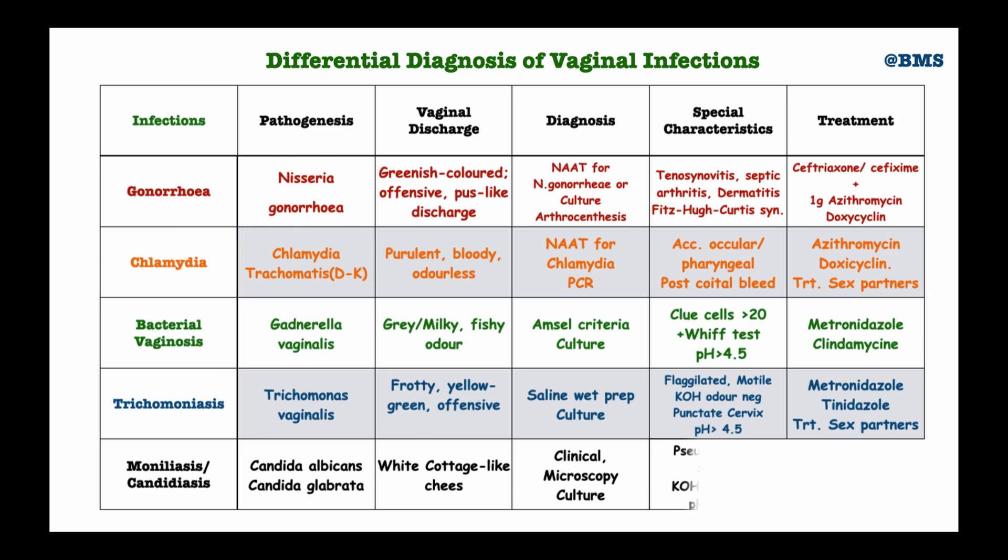The special microscopic features of candidiasis include pseudohyphae or branching hyphae of Candida albicans, and spores may also be found. When 10% potassium hydroxide is added to the vaginal swab, there is no intensification of odor. The vaginal pH is always within normal range, between 4 and 4.5. We treat candidiasis with topical azoles, nystatin, and fluconazole. That is all for today — thank you very much for your attention.